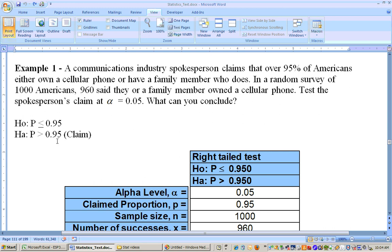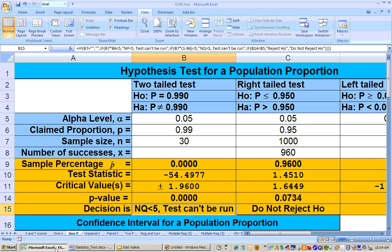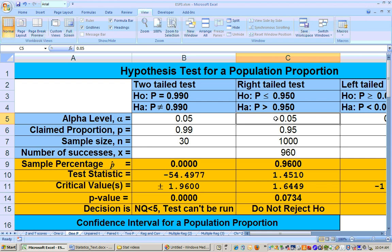So 960 out of 1,000 is 96%. Now 96% is greater than 95%, but is it significantly greater than 95%? What does that mean? Well, it means that this test statistic has to lay in the rejection region. Now let's go ahead and do the problem. It's actually a pretty easy problem to do on Excel. It says to run at the 0.05 alpha level.